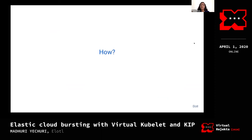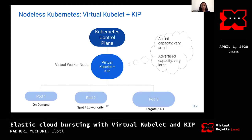Now that we've looked at these three key use cases for cloud bursting, what are a couple of ways to achieve it? One way is to use Nodeless Kubernetes. Nodeless Kubernetes presents a virtual worker node to the control plane. The virtual worker node runs two open source projects: virtual kubelet and a cloud instance provider that works under virtual kubelet. The virtual worker node advertises a very large capacity to the control plane. When a pod comes in with an affinity to run on the virtual worker node, the control plane ships the pod over to it.